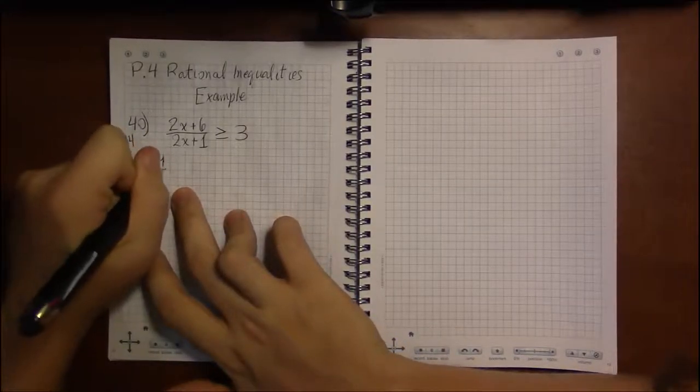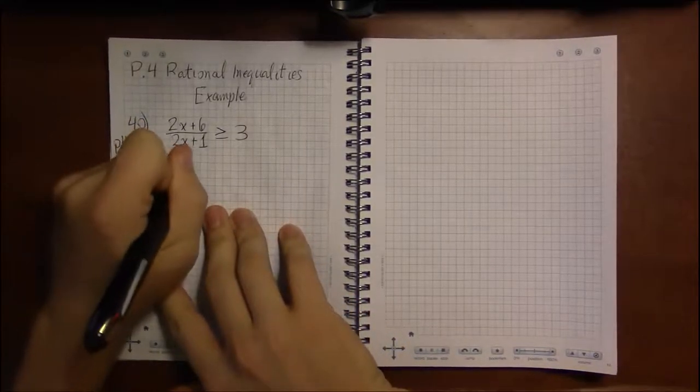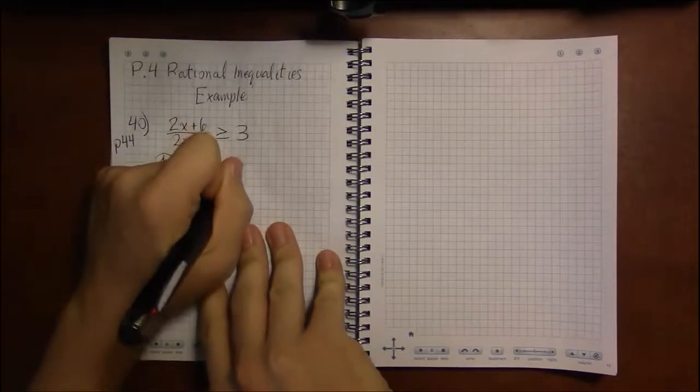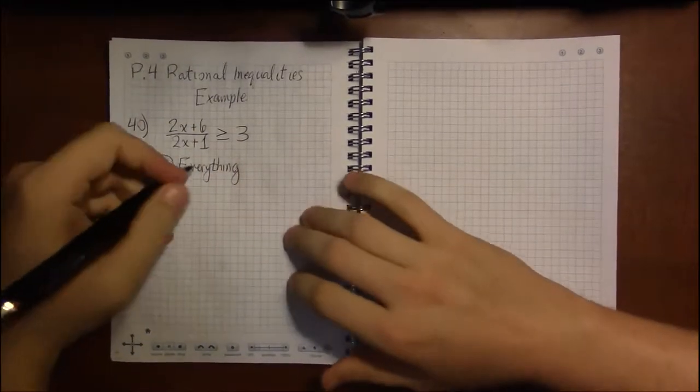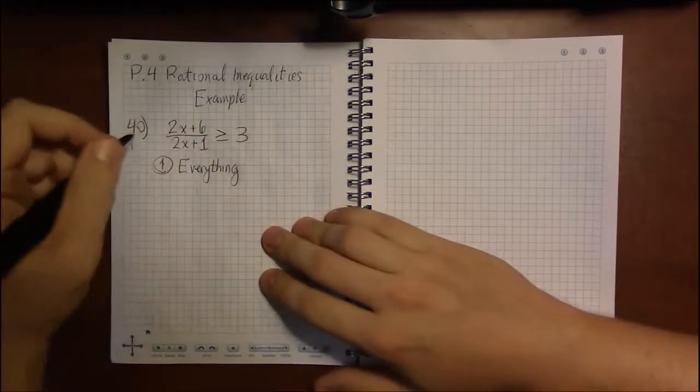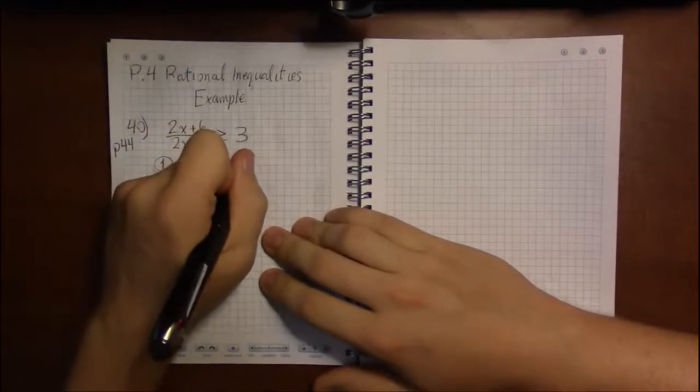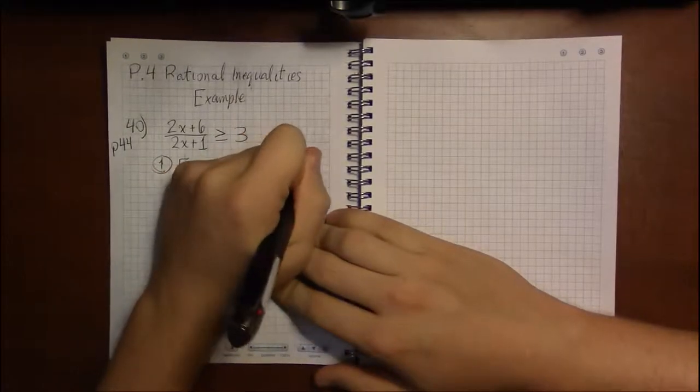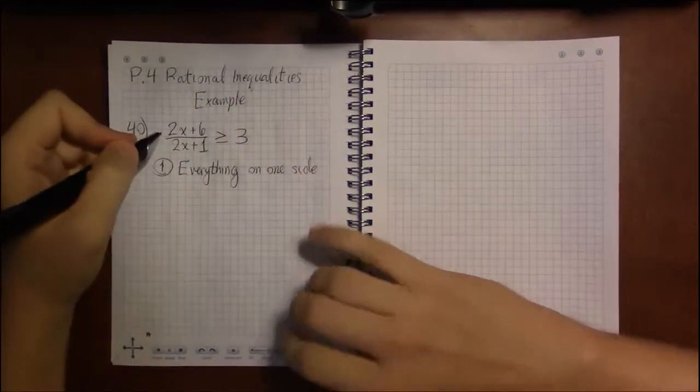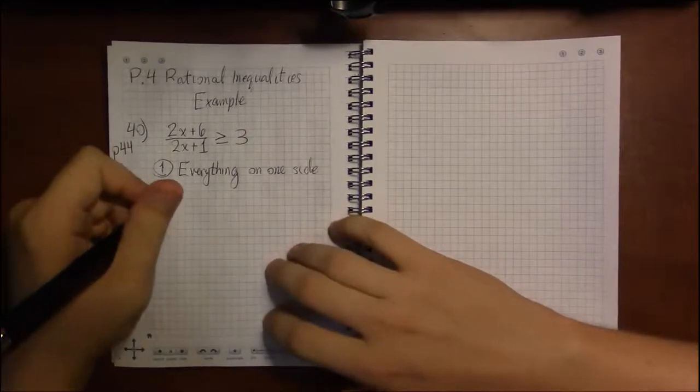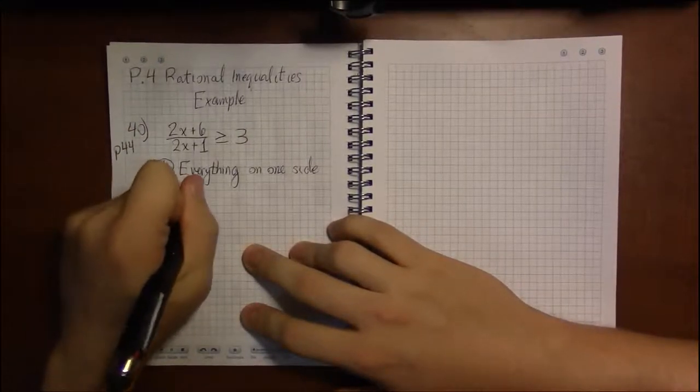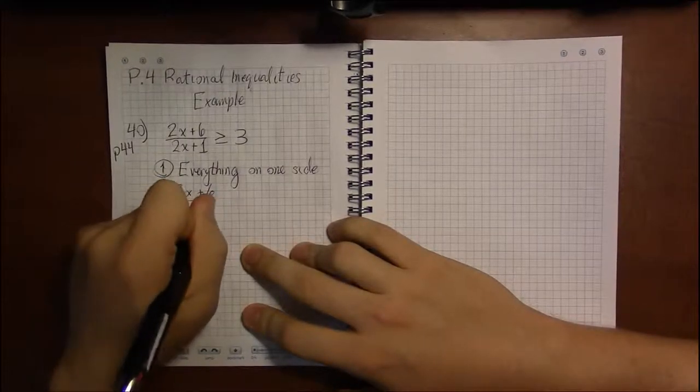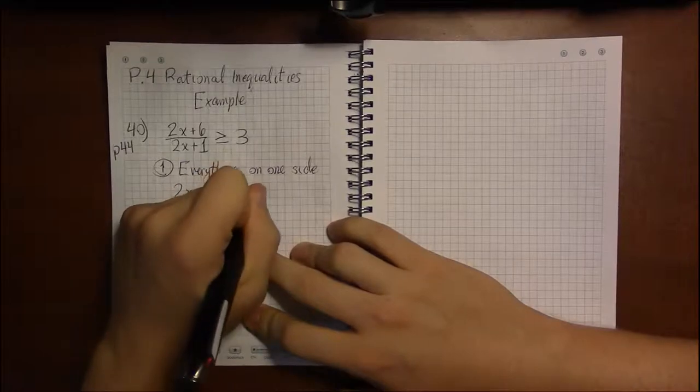Step one, everything on one side. And it's funny. Some of my friends say, oh, your videos show how much enthusiasm you bring to math. Yeah, a lot of enthusiasm here. So, everything on one side. And at the very least, I'm not going to lie to you. Boring as can be. 2x plus 6 over 2x plus 1. So, we're going to have to subtract 3 from both sides.